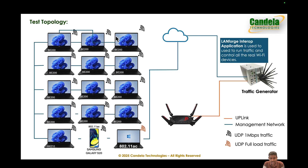Here is the test topology. We had 15 clients total — a mix of several types of OFDMA capable clients, mostly the Intel BE200 which is Wi-Fi 7, along with an AX210 which is Wi-Fi 6E, and a Samsung Galaxy S20 which is Wi-Fi 6. There was also an 11AC client in the mix — this is the non-OFDMA capable client. We ran unlimited uplink traffic on this 11AC client, whereas the remaining 14 clients ran 1 Mbps uplink traffic each — so 14 Mbps total across the 14 OFDMA clients.